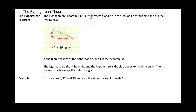For example: do the sides 5, 12, and 13 make up the sides of a right triangle? Well, any right triangle fits the Pythagorean theorem, so for any right triangle, a squared plus b squared must equal c squared.